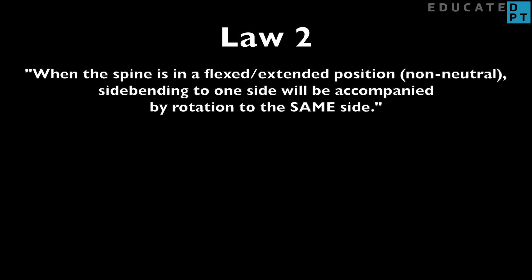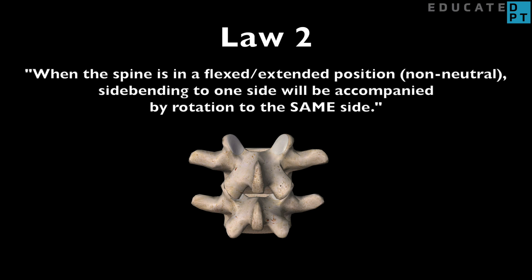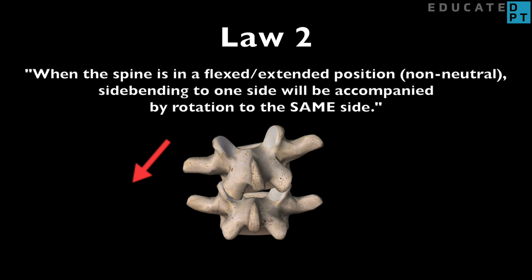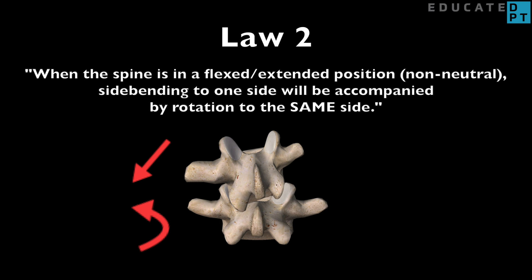Law 2. When the spine is in a flexed or extended position — in other words, not neutral — side bending to one side will be accompanied by rotation to the same side. Per the previous example, when your spine is not in alignment, side bending to the left will be coupled with rotation to the left, the same side.